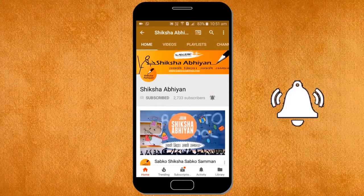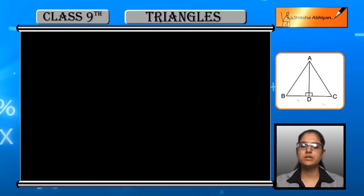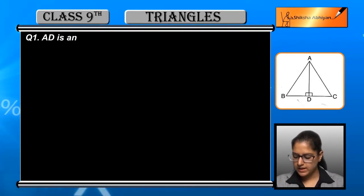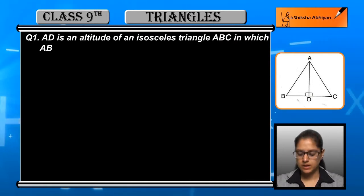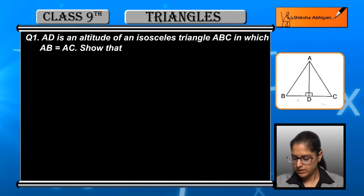Exercise 7.3, question number 1: AD is an altitude of an isosceles triangle ABC in which AB is equal to AC. AD is an altitude in isosceles triangle ABC in which AB and AC are both equal.